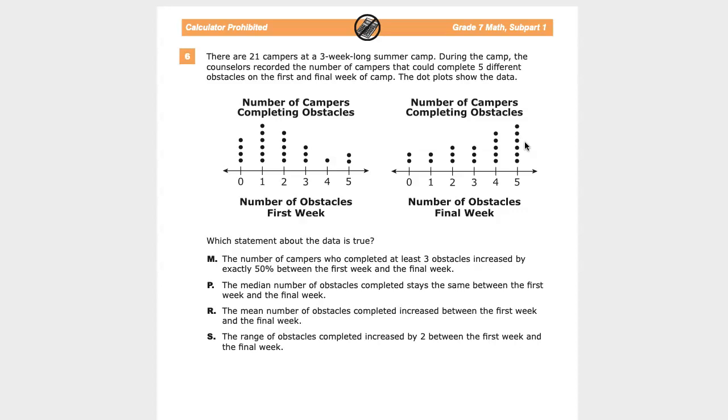So there are a few things that we could go about looking here. One of them is blatantly obvious that it's true. The mean number of obstacles completed increased between the first week and the final week. Well, all you're really saying is that on average, more people completed obstacles before than they did after. And look at the numbers spread down here. Very low, right?